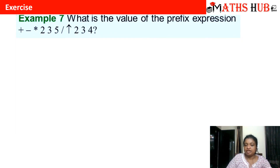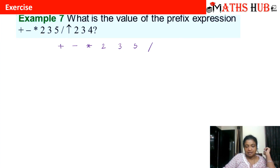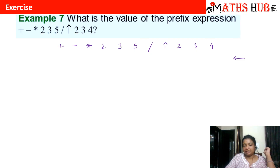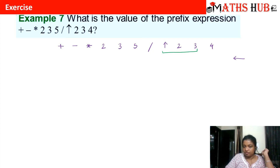The next type of question is: given a prefix expression, evaluate it. The expression is: + − × 2 3 5 ÷ ^ 2 3 4. When solving a prefix expression, we start from the back end and look for an arithmetic operation followed by two numbers. The first pair we find from the back is ^ 2 3, which means 2 to the power 3, equal to 8.